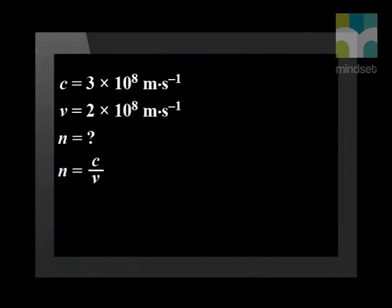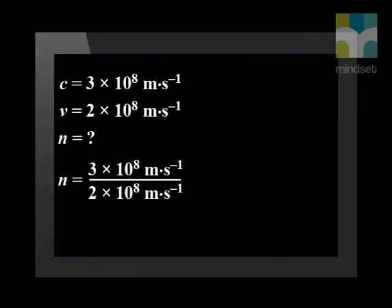Our next step is to write down the equation we will use: n = c ÷ v. Now we can substitute our variables into the equation. So n = (3 × 10⁸) ÷ (2 × 10⁸). Therefore the refractive index of the glass bead, n, equals 1.5.